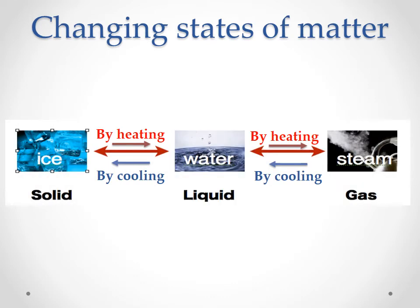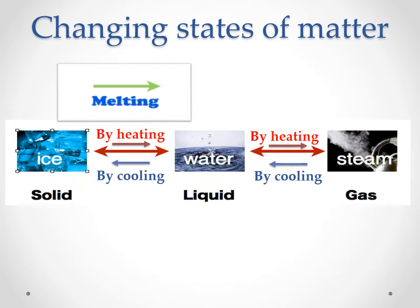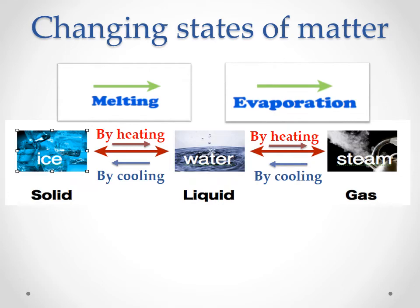Let's recap the changing states of matter. Solid to liquid: by heating, this is melting — like taking ice out of the refrigerator and leaving it, it turns to water. From liquid to gas: by heating, this is evaporation — water in a boiler turns to steam. So solid to liquid is melting, and liquid to gas is evaporation.